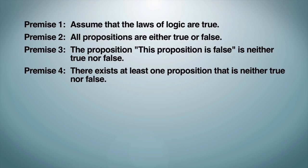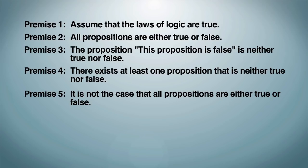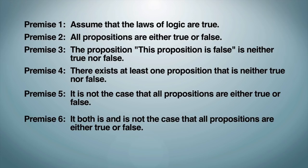Premise 4: There exists at least one proposition that is neither true nor false. Premise 5: It is not the case that all propositions are either true or false. Premise 6: It both is and is not the case that all propositions are either true or false. Therefore the laws of logic are not true.